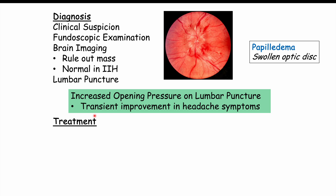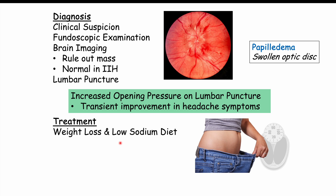Treatment includes conservative management such as weight loss — losing at least 10% of body weight — and a low sodium diet, which can help resolve or reduce symptoms. However, because these take time and vision loss is a concern, pharmacological treatment is needed. Acetazolamide is the first-line treatment — a carbonic anhydrase inhibitor that significantly reduces CSF production and acts as a diuretic. Topiramate is used second-line as a weaker carbonic anhydrase inhibitor and diuretic.